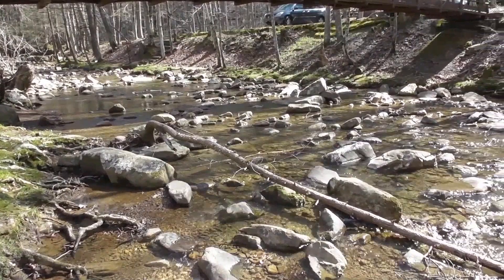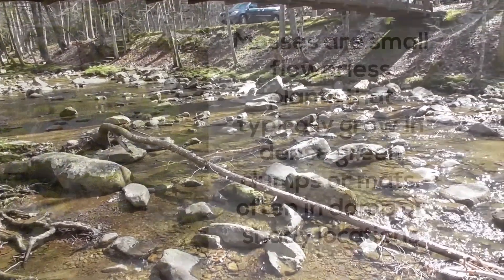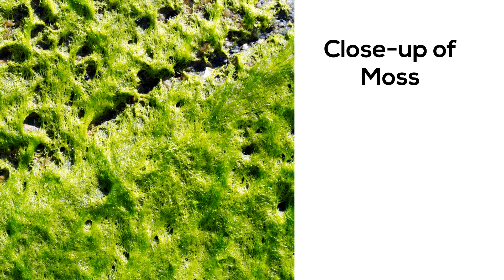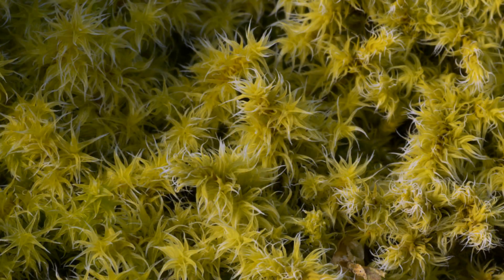Mosses are small flowerless plants that typically grow in dense green clumps or mats, often in damp or shady locations. The individual plants are usually composed of simple leaves that are generally only one cell's thick, attached to a stem.